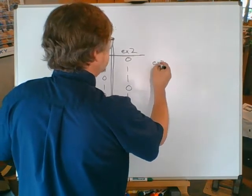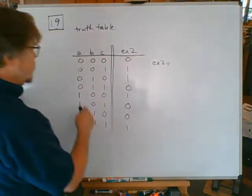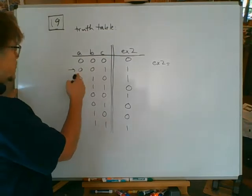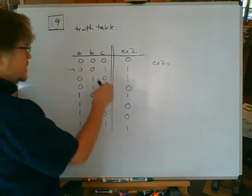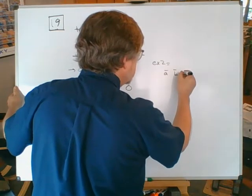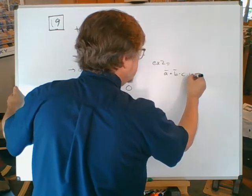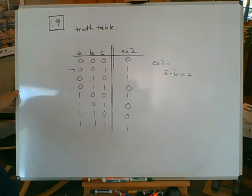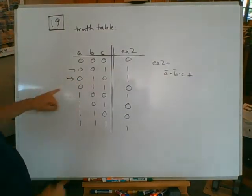Not a, not b, c. Not a, not b, c. And then how else could we get a one? Well, we get one right here: not a, b, not c. Not a, b, not c.